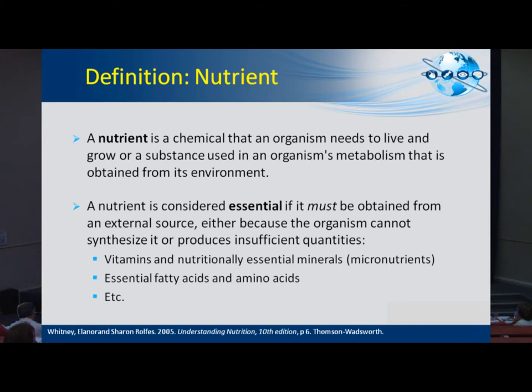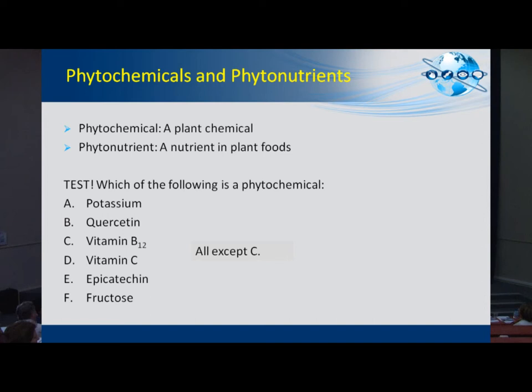Essential nutrients must be obtained from the diet because we cannot synthesize them, or we produce them in insufficient quantities. Examples are vitamins and nutritionally essential minerals — also called micronutrients — as well as essential fatty acids and amino acids. Of course, there are also non-essential fatty acids and amino acids, and many other nutrients that are essential or non-essential.